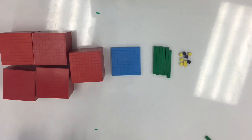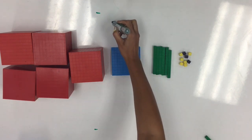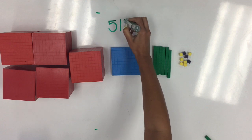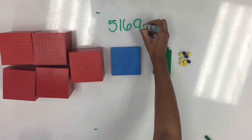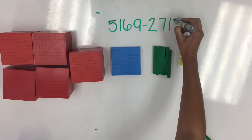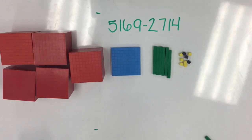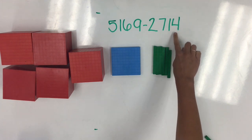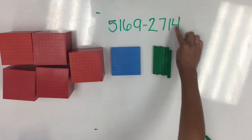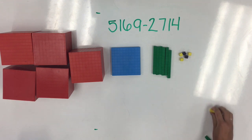This time, I have 5,169, and I want to subtract 2,714. Just like in our other examples, we're going to start with the ones place. Here, it's wanting me to take away 4 ones, so I can move 1, 2, 3, 4 ones out.